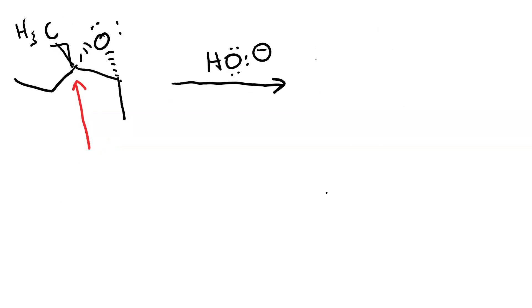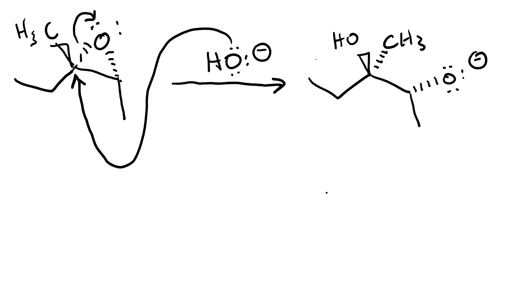The hydroxide is going to attack the epoxide on the more substituted carbon of the ring, because there is more partial positive charge there. In other words, it's more electrophilic. There's SN2 attack on the more substituted carbon, and the ring opens. Here's the product.